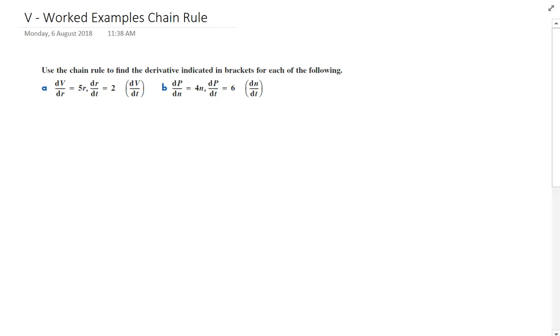All right, just really quick, a couple of examples with the chain rule. If the change in V, let's say volume, the change in volume with respect to radius is equal to 5r, and the change in radius with respect to time is equal to 2, then the change in volume with respect to time, volume with respect to time.